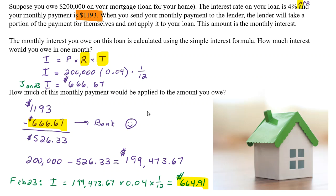Every month you're using the simple interest formula to calculate the interest, and it continues until you owe nothing. This works the same way on credit cards as well. Whatever your balance is that you're getting charged interest on, times the rate, times the time — one month — that's how much interest you're going to owe for that month. This process just continues until you owe nothing.